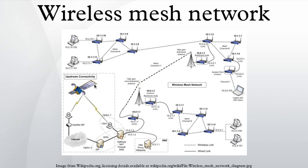Calls between two satellite phones are routed through the mesh, from one satellite to another across the constellation, without having to go through an Earth station. This makes for a smaller travel distance for the signal, reducing latency, and also allows for the constellation to operate with far fewer Earth stations than would be required for 66 traditional communications satellites.